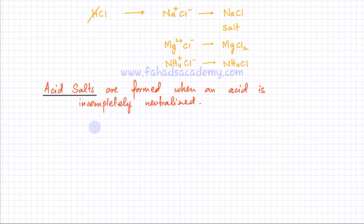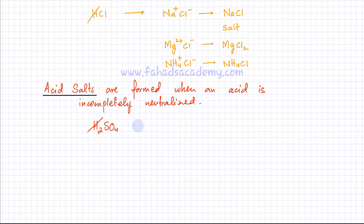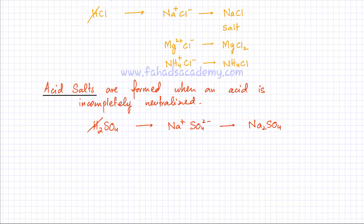For example, if I have sulfuric acid, H₂SO₄, to make a salt I need to neutralize it — I need to get rid of the two H⁺ ions and replace them with other positive ions. If I replace them with Na⁺, and SO₄ is 2 minus, the formula would be Na₂SO₄. This is complete neutralization: I got rid of both H⁺ ions and replaced them with two Na⁺ ions, giving sodium sulfate.